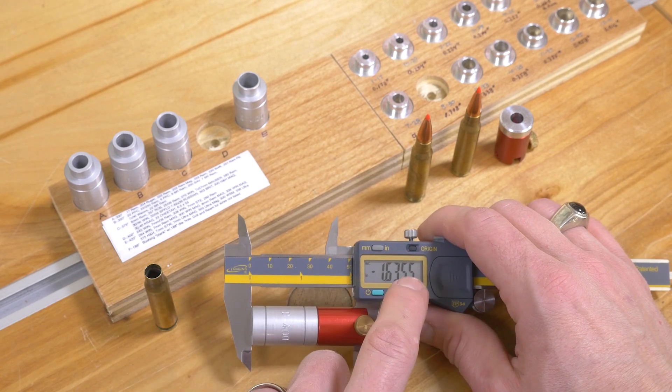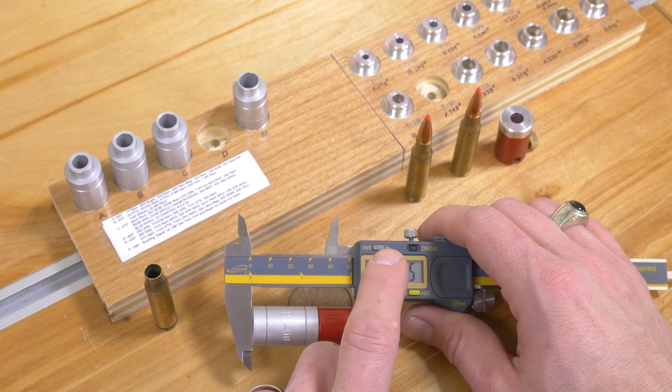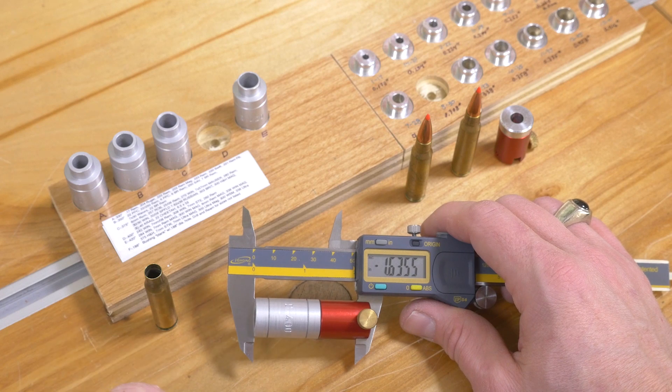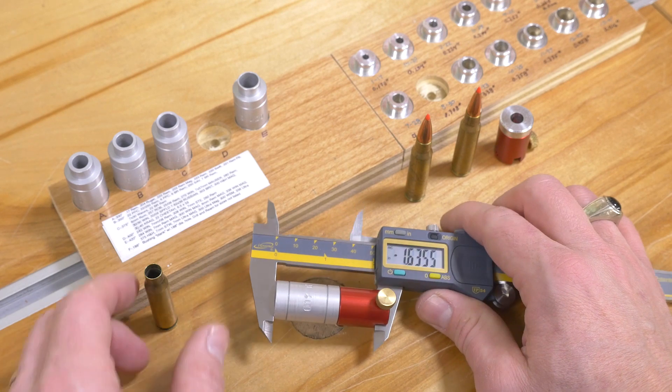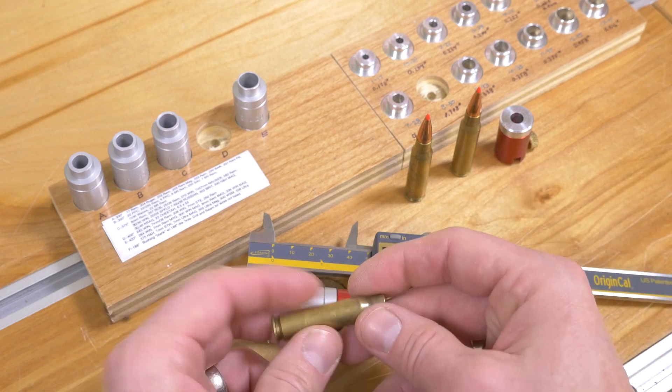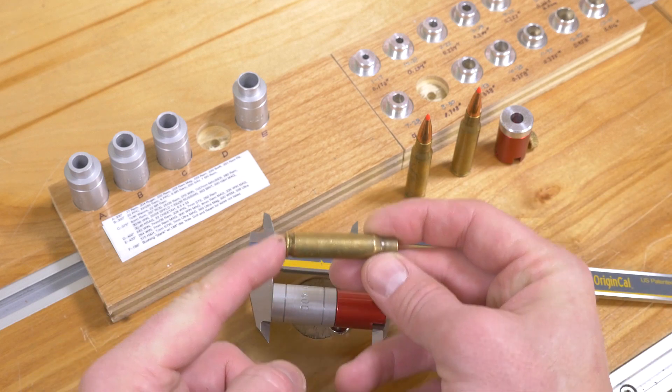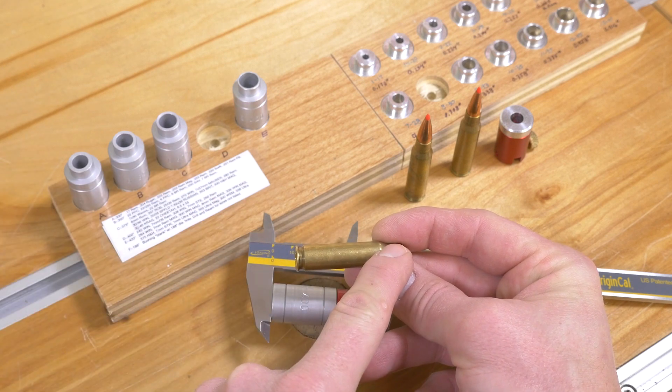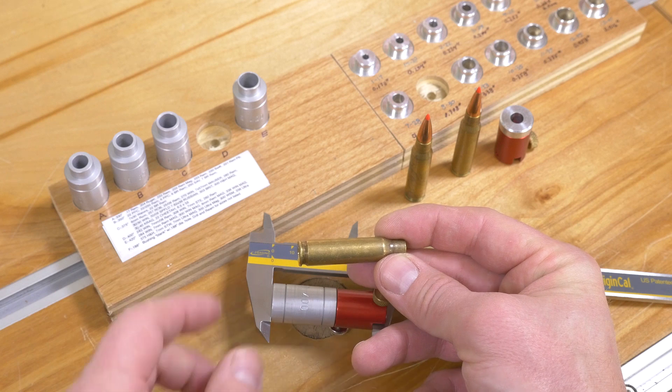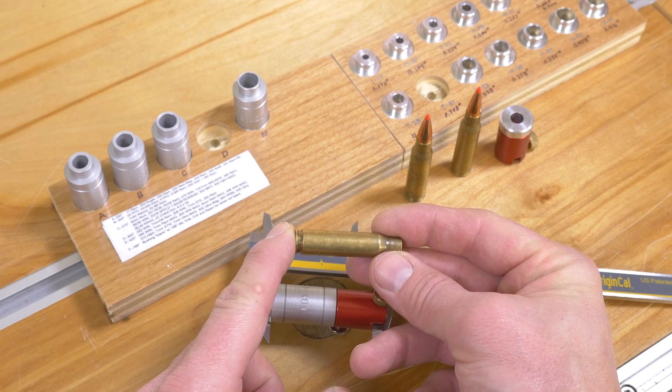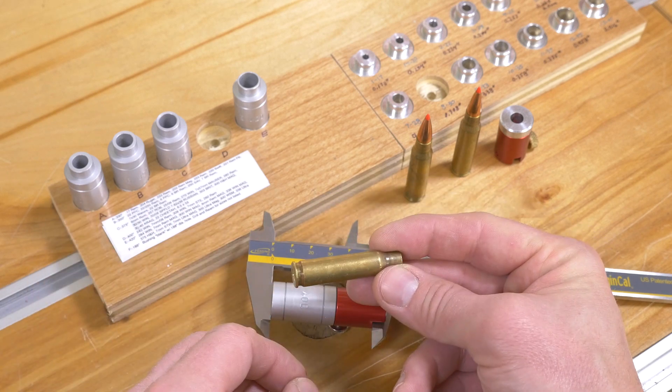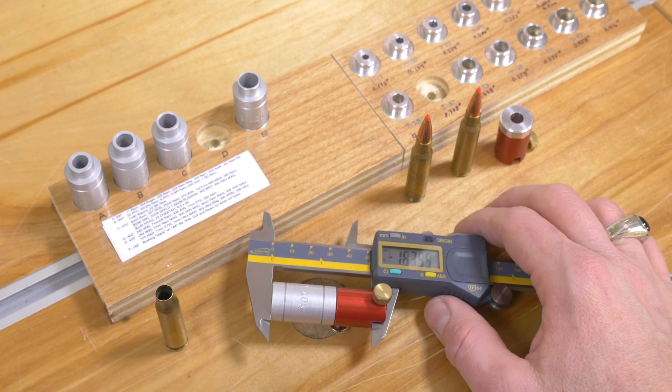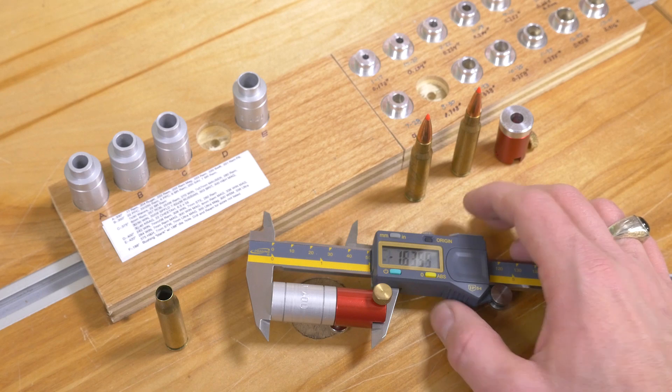So this is useful to see how consistent our sizing is for shoulder setback. A lot of different variables, like the thickness of the brass, will affect how much spring back there is. But we can also use it to set up our sizing die. If we want that five thousandths of an inch shoulder bump for semi-auto, or if we want one thousandth of an inch for our bench rest shooting for that particular cartridge, we're going to be able to do that quite effectively with a tool like that, in conjunction with a case gauge.